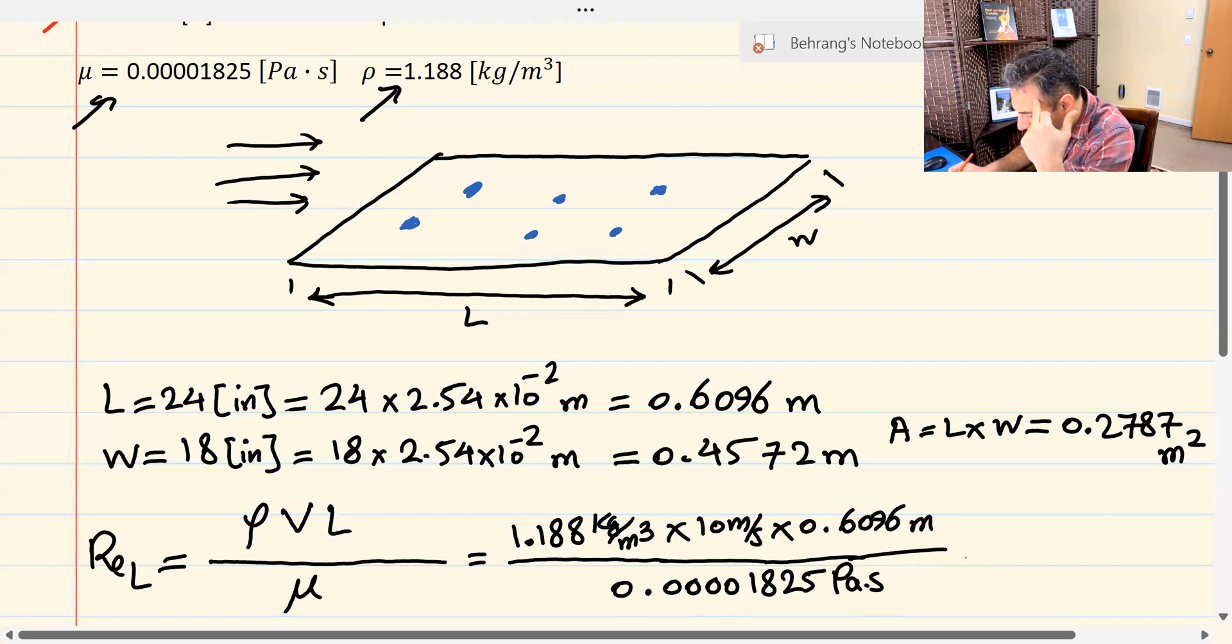That is viscosity. I already calculated the value of Reynolds number, and it turns out to be 396898. You can go ahead and double check this to see if I calculated correctly.